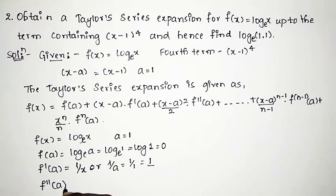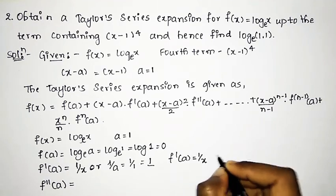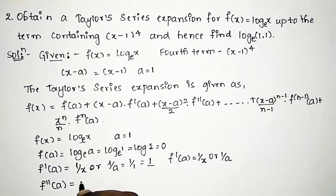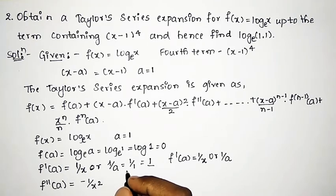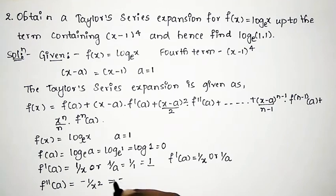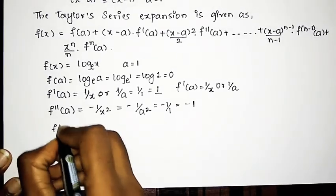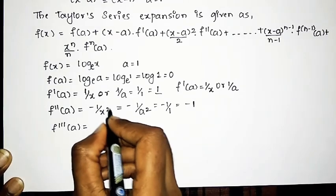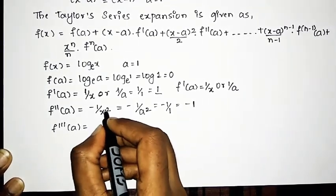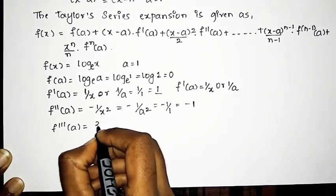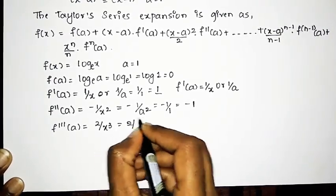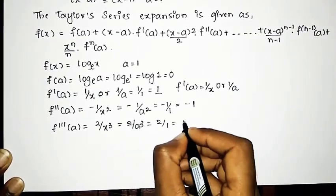Similarly, f''(a): the derivative of f'(x) = 1/x is -1/x². Substituting a = 1: f''(a) = -1/a² = -1/1 = -1. For f'''(a): the derivative of -1/x² is 2/x³. Substituting a = 1: f'''(a) = 2/1 = 2.